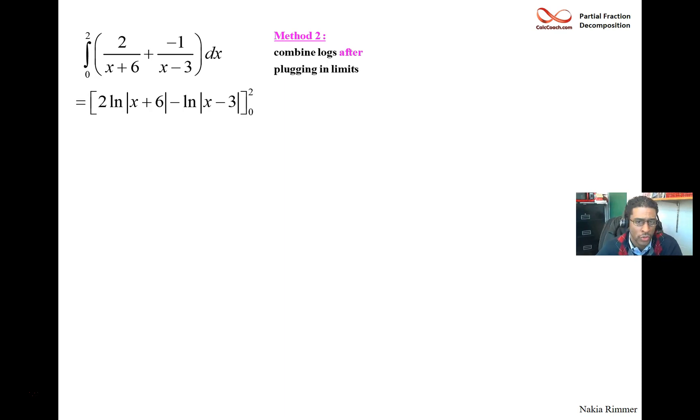Here we go with the second one where we definitely get the same integration, but now we're going to combine the logs after plugging in. Put a 2 in, 2 log 8 minus log 1. Put a 0 in, 2 log 6 minus log 3. And so then we're just going to plug in and deal with the fact that natural log of negative 1 is equal to 0.